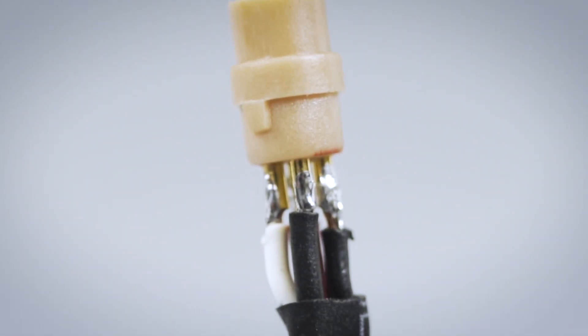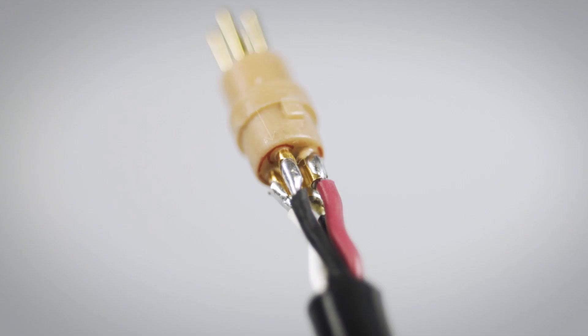Solder the conductors to their respective cups. Note that the red circled cup is pin one, then follow the red line for pins 2, 3, and 4.